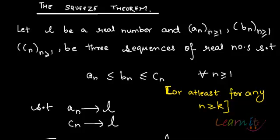Let's do the squeeze theorem, which is also known as one of the convergence criteria. The squeeze theorem says that let L be a real number and let a_n, b_n, c_n be three sequences of real numbers such that there is a special relationship between the three of them.